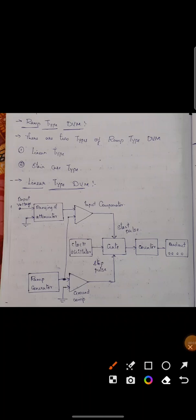Previously, we had discussed successive approximation type DVM and the second type is ramp type DVM. In ramp type DVM, there are two types: one is linear and another one is staircase. So let's discuss linear type DVM.